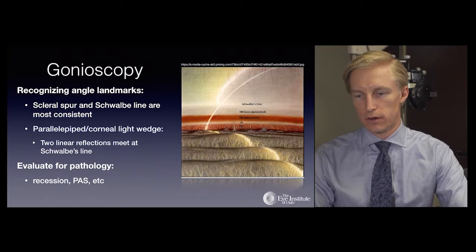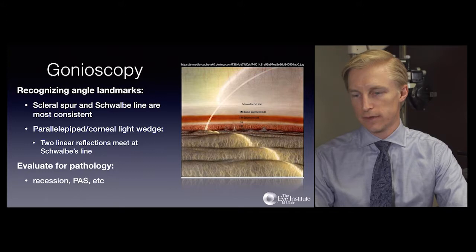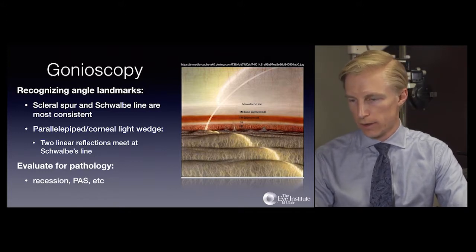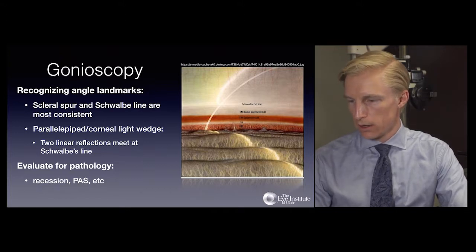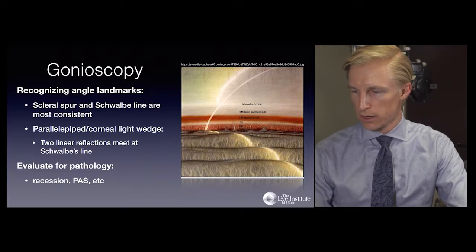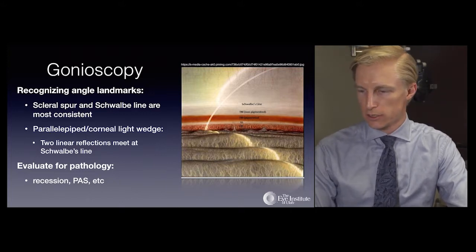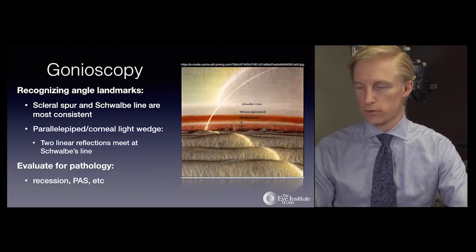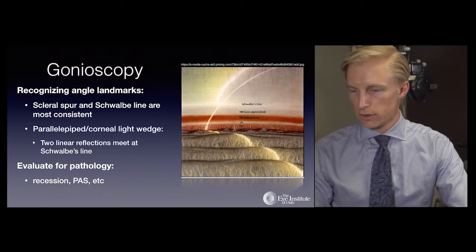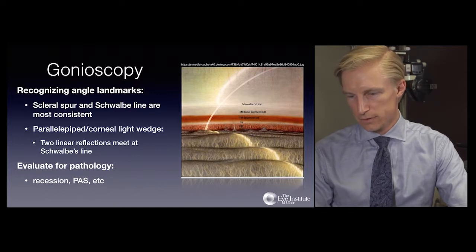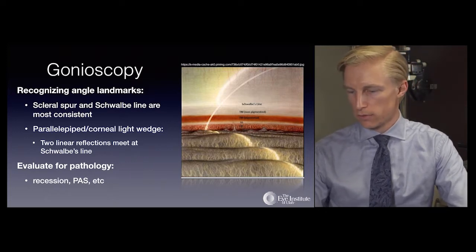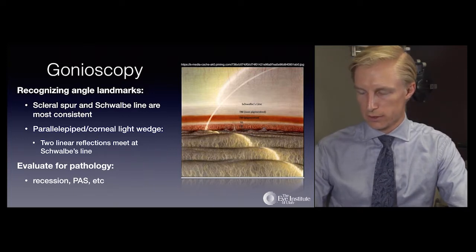Important points with gonioscopy include orienting yourself and recognizing important angle landmarks. The scleral spur and Schwalbe's line are the most consistent landmarks. An easy way to identify Schwalbe's line is with the corneal light wedge, where two parallel light beams converge at the peripheral cornea. Posterior to Schwalbe's line is the non-pigmented trabecular meshwork, then the pigmented trabecular meshwork, the scleral spur, and finally the ciliary body and iris root. Evaluate also for pathology such as angle recession, iridodialysis, peripheral anterior synechiae, and neovascularization.